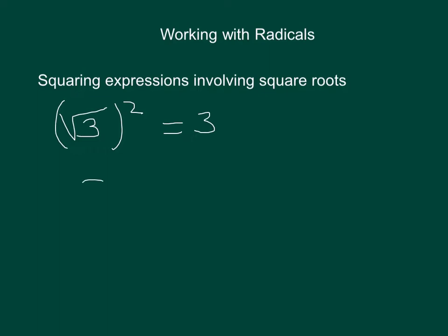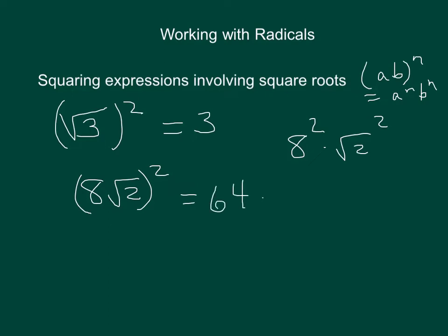So if I had like 8√2 and I was squaring that, if you remember right from our rules of exponents, that means the same thing as 8² times (√2)², because we're using the rule (ab)^n = a^n × b^n. We're going to square the 8 and we're going to square the √2, so that ends up being 64 times 2, which equals 128.